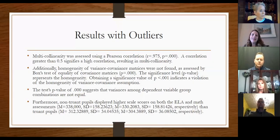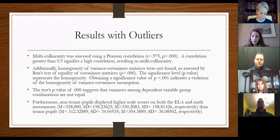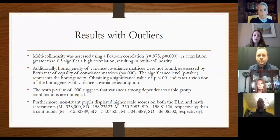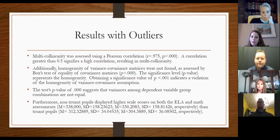The multicollinearity test examines how inter-associated the independent variables are. You want them to be independent — you don't want a strong relationship between them. In this instance it did fail: there was a very high correlation. It required a value less than 0.5 and the result was 0.975. Additionally, there was not equal variance among the data, as shown by the variance and covariance matrices.